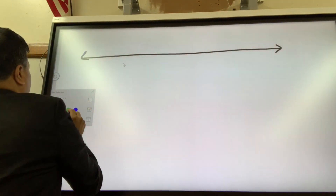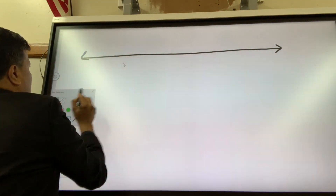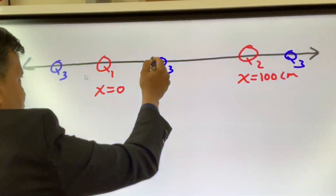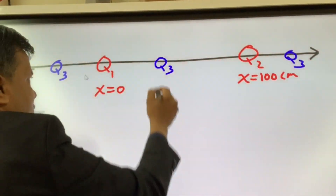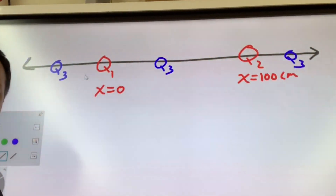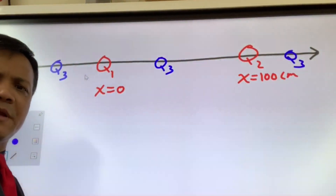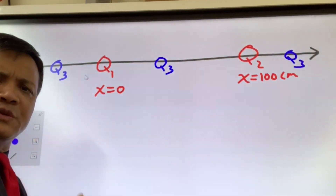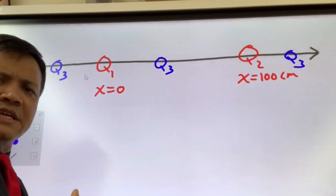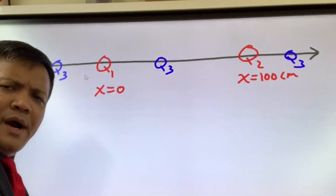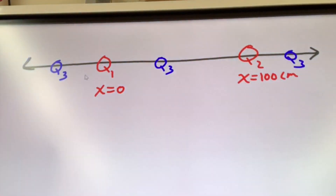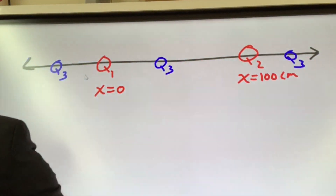Let's draw the chart. I think q3 placed in the middle will experience zero net electric force. However, you have to prove this by using the vectors, so let's draw the vectors.